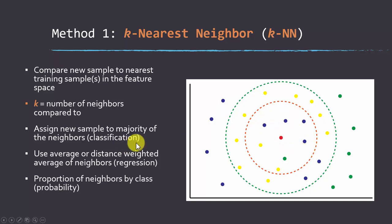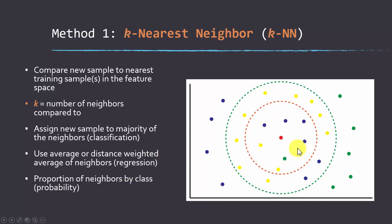If you're doing regression, it's common to use inverse distance weighted averaging — the nearer features have a higher impact on the final continuous measurement than ones farther away. For a probabilistic prediction with two classes, you look at the proportion of neighbors in each class, assign to the class with the highest count, and that proportion represents the probability.